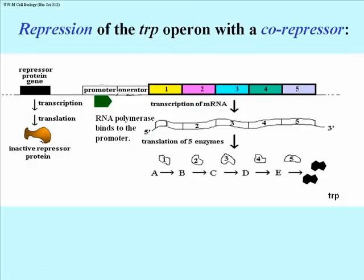Let's look at repression of the trp operon. This is a five-gene operon. Genes 1, 2, 3, 4, and 5 code for enzymes in the metabolic pathway by which a cell can synthesize the amino acid tryptophan — illustrated as A → B → C → D → E → tryptophan, with enzymes 1 through 5 catalyzing each step.